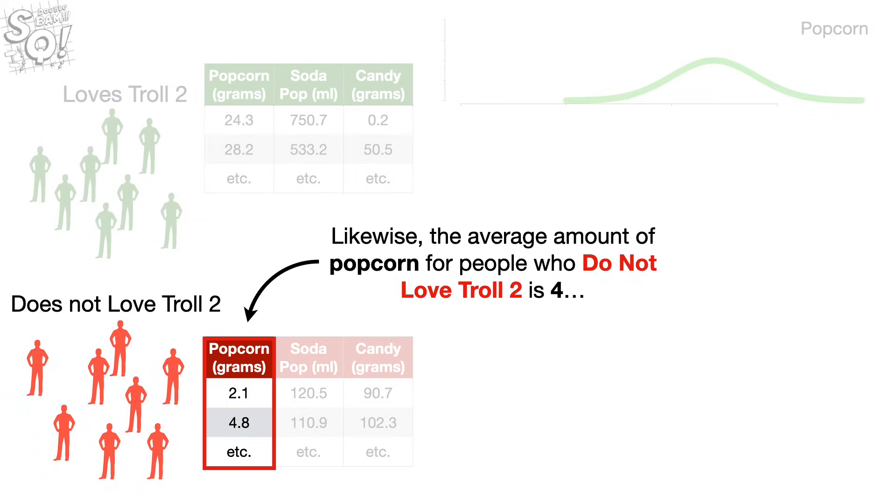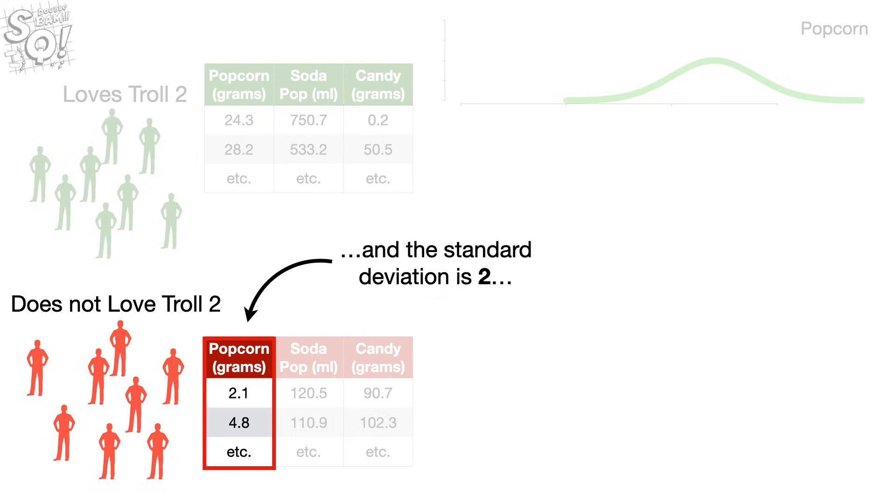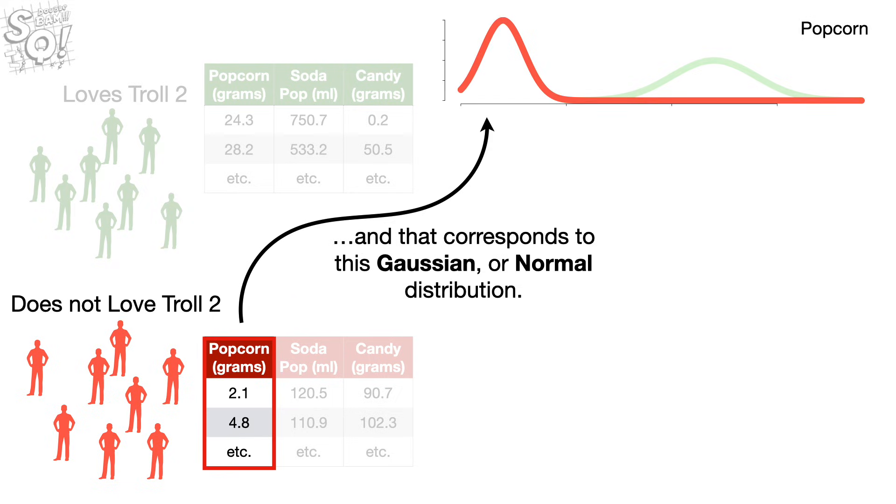Likewise, the average amount of popcorn for people who do not love Troll 2 is 4. And the standard deviation is 2. And that corresponds to this Gaussian, or normal, distribution.